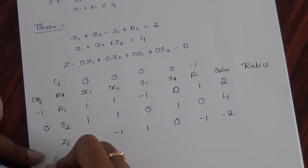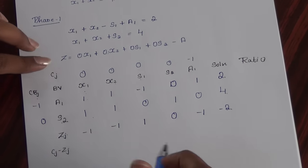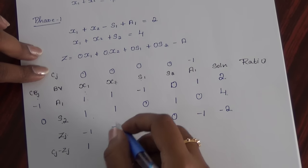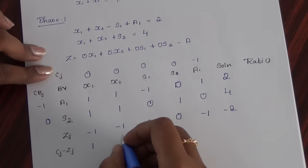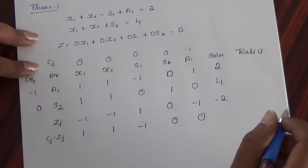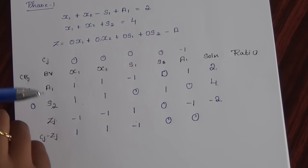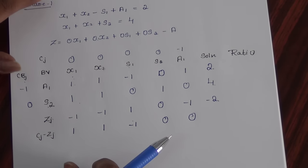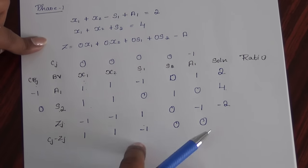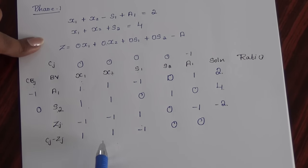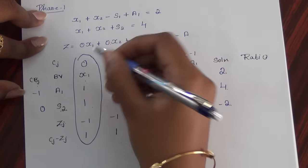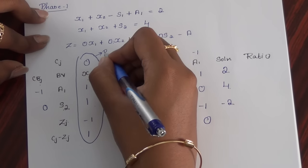Proceeding with cj minus zj: cj is 0, so 0 minus of minus 1 gives 1. Similarly for x2 it gives 1. Then minus 1, 0, and 0. Since the given question is minimization converted to maximization, I take the maximum value, which is 1. Since there are two 1s, I take the first column — this is my pivot column.